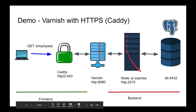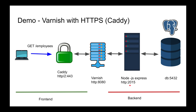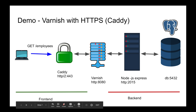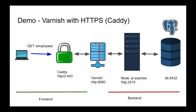You might wonder: what if my backend is in the cloud and already on HTTPS? Well, Varnish open source doesn't support HTTPS backend connections. In Varnish Plus — the paid version — Varnish can make HTTPS connections to a secure backend. That feature is missing in open source. You cannot make an HTTPS request to an encrypted backend with open source Varnish.